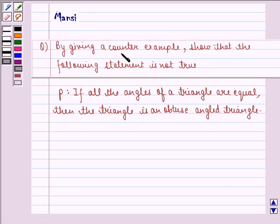The question says by giving a counter example, show that the following statement is not true: If all the angles of a triangle are equal, then the triangle is an obtuse angled triangle.